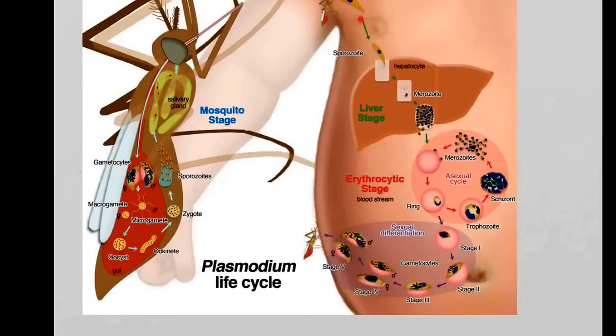Here you see these sporozoites in the capillaries, in the veins, and they move to the liver.